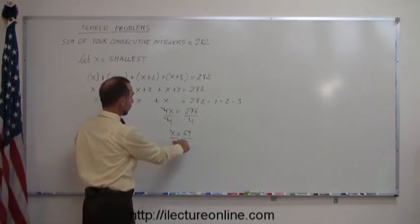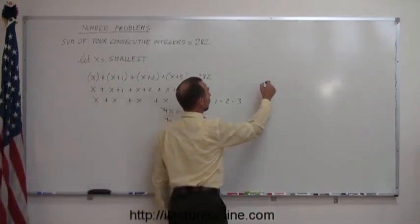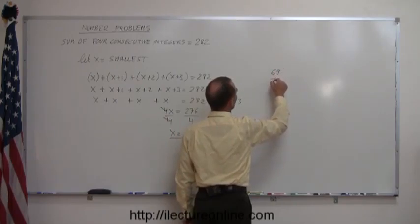That means that the next one is one more, the next one is one more, and so forth, so the four numbers are 69, 70, 71, and 72.